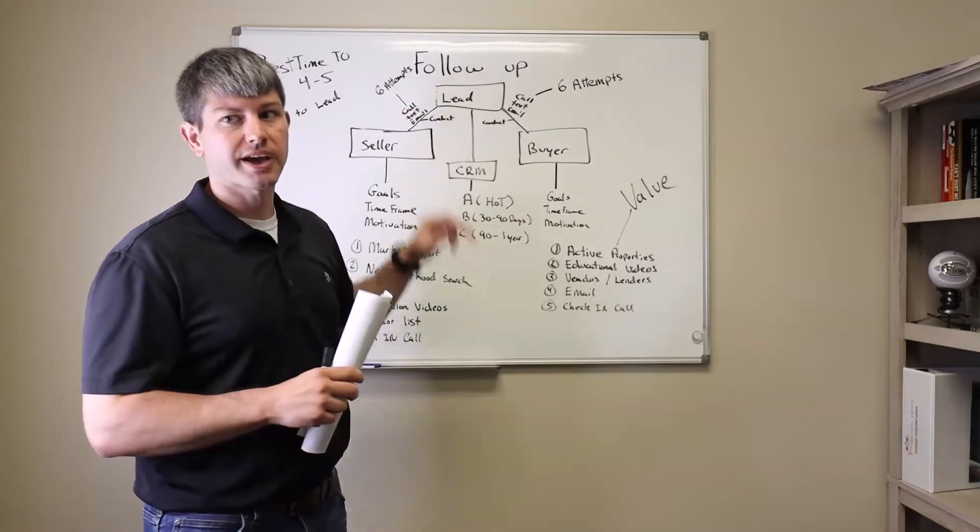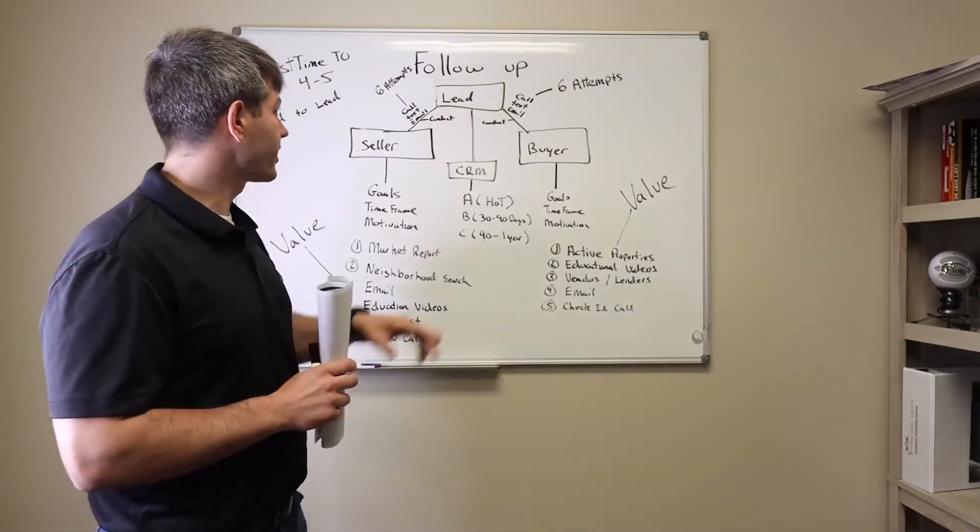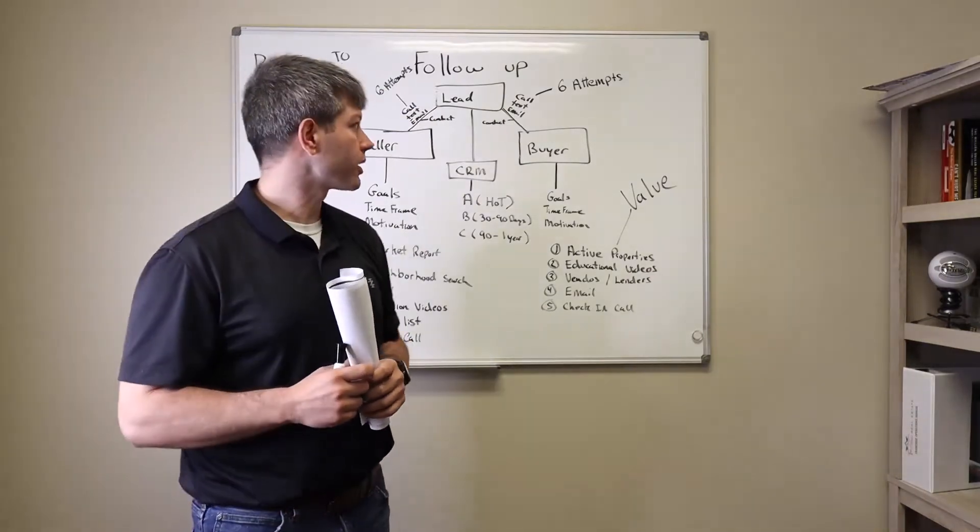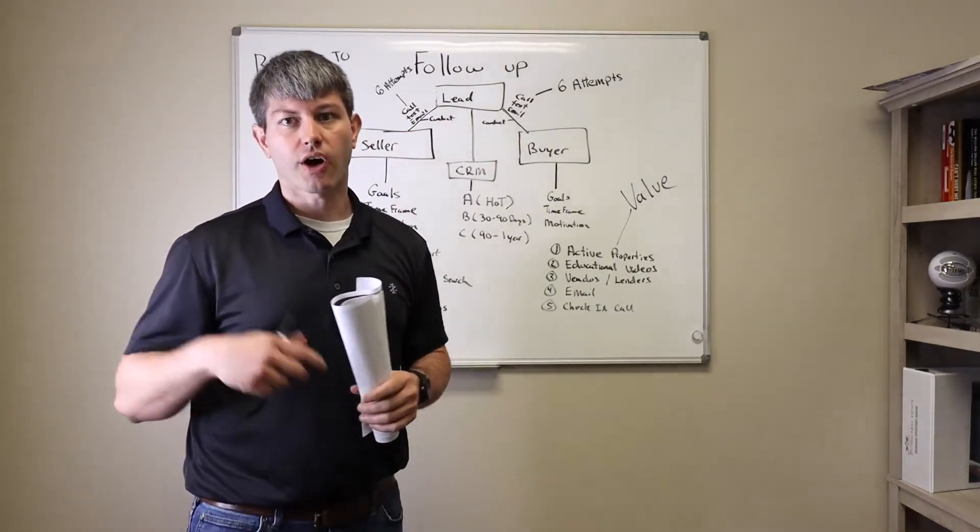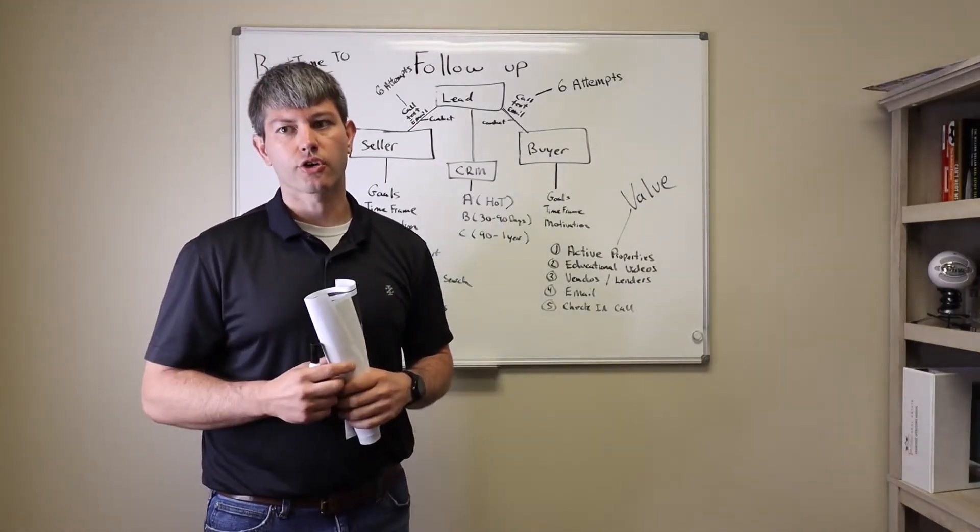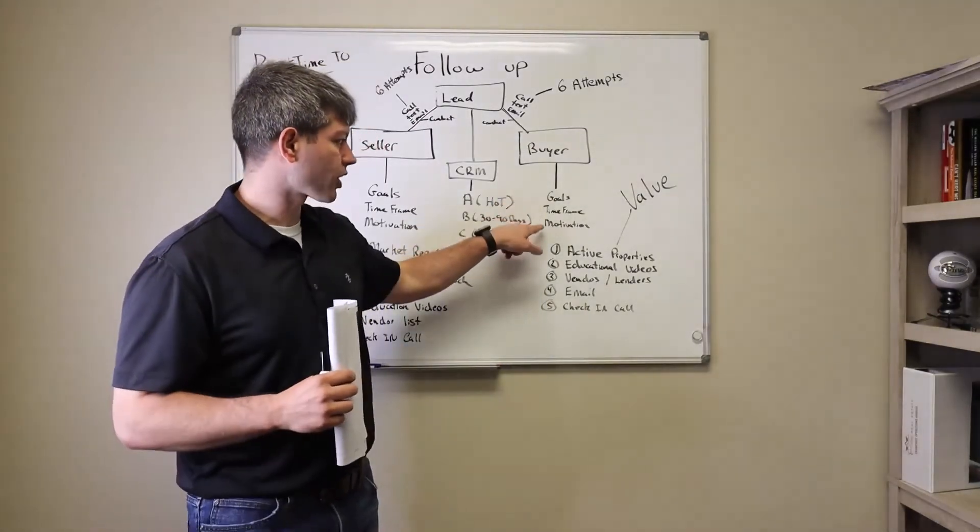We know we need to make at least six attempts, and a lot of this stuff - the text and the email - can be automated with our CRM. The whole goal of all these attempts is to make contact to actually speak to them, to understand what are their goals, timeframe, and motivation.